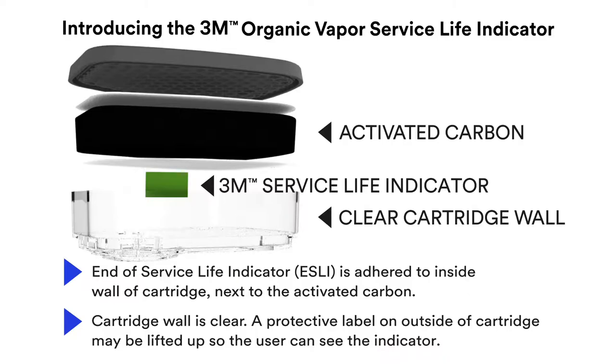In the 3M organic vapor cartridge 6000i series, the 3M Service Life Indicator, or ESLI, is located inside the cartridge next to the activated carbon. The cartridge wall is clear, so light can enter and exit.